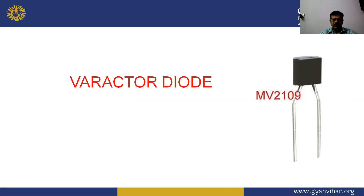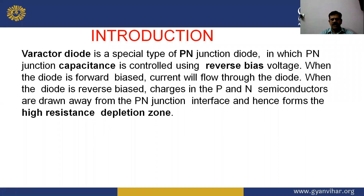The Varactor diode is a special type of P-N junction diode in which the P-N junction capacitance is controlled using reverse bias voltage. When the diode is forward biased, current will flow through the diode.